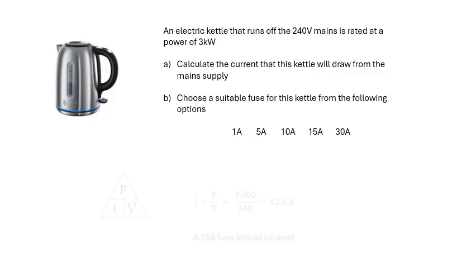There we go. We're working out the current. So I equals P over V. So it's 3,000 because it's 3 kilowatts, 3,000 over 240 is 12.5 amps. So we should use a 15 amp fuse. Why? If we used a 10 amp fuse, every time you turned on the kettle the fuse would blow. If you used a 30 amp fuse, there could be a big problem. The kettle could be on fire and setting fire to your kitchen, but the fuse hasn't done anything. You want the value of the fuse to be the one which is just above the normal current, the working current.